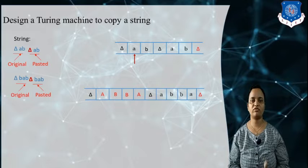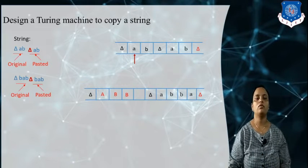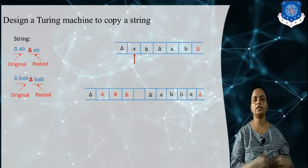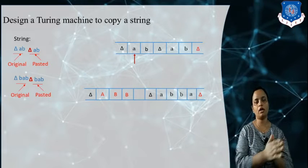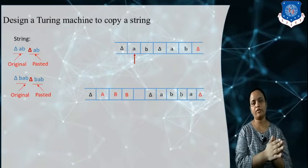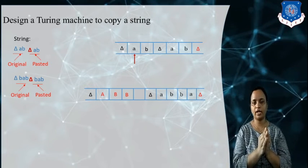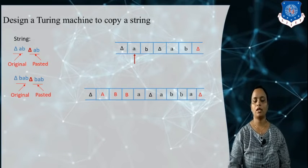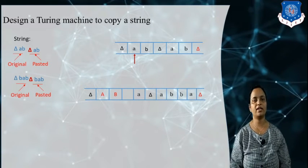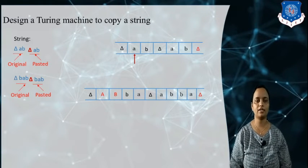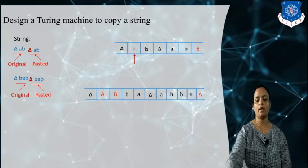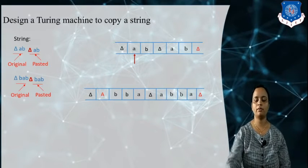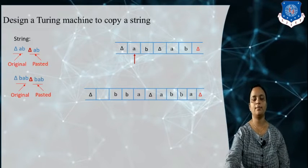We have now pasted our original string and generated the copy string. We now replace all capital letters back to lowercase by moving the tape head to the left: capital A becomes small a, capital B becomes small b, capital B becomes small b, capital A becomes small a.